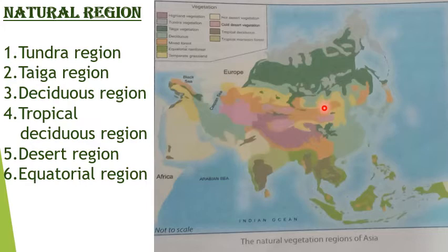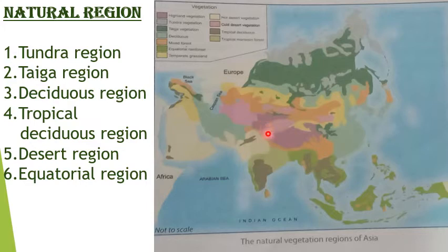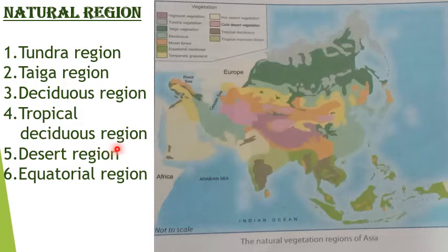Then highland vegetation — highland means on the top of the mountains — and mixed forests occur mostly in the central part of Asia, which are mountainous regions. Equatorial rainforest, as the name suggests, is found in areas around the equator. Desert vegetation is found in the desert regions of Asia: the Arabian desert and Thar desert.